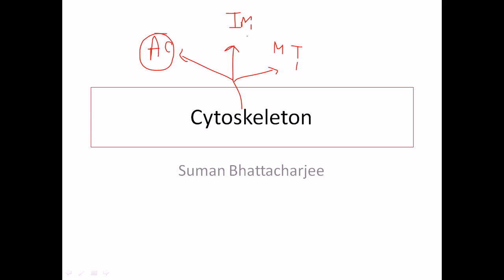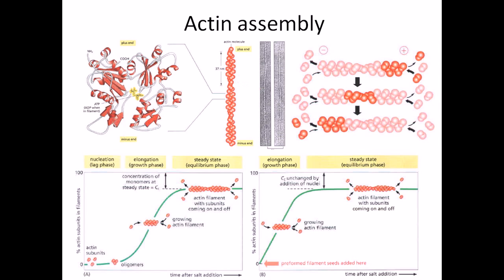We will discuss actin filaments first, then intermediate filaments, then microtubules. Actin filament is a polymer — a linear polymer made up of actin proteins. These actin proteins are arranged together in a coil-like structure, forming a slightly twisted strand. If we zoom into a particular actin protein, we can find regions made up of alpha helices and regions made up of beta sheets, joined together via loops.